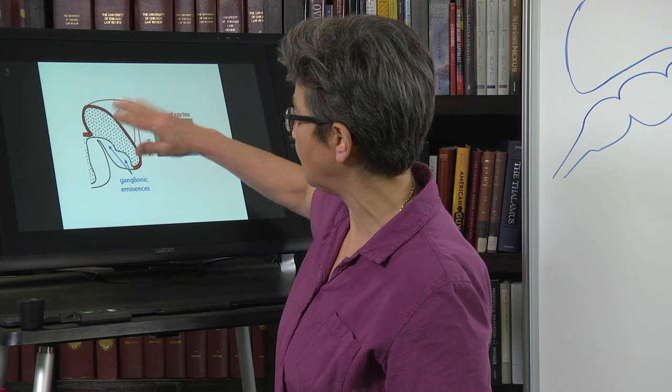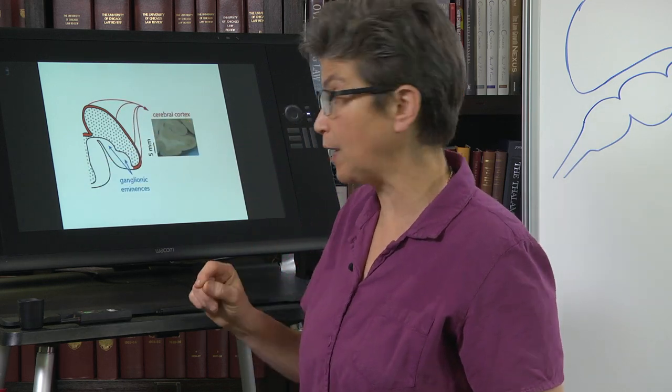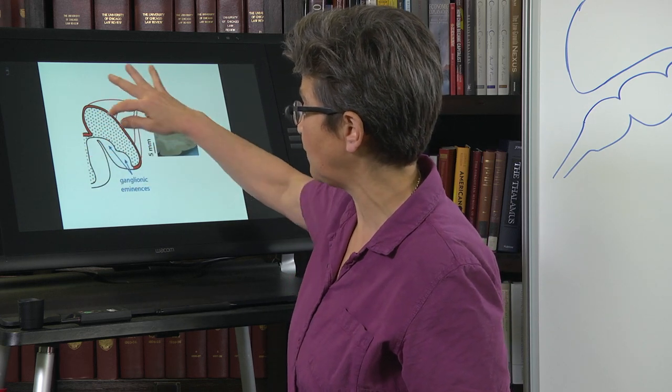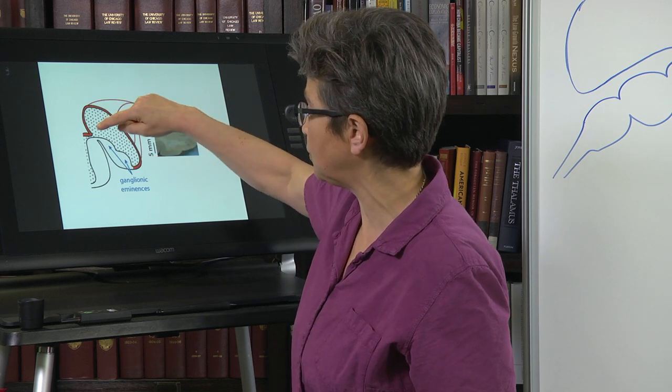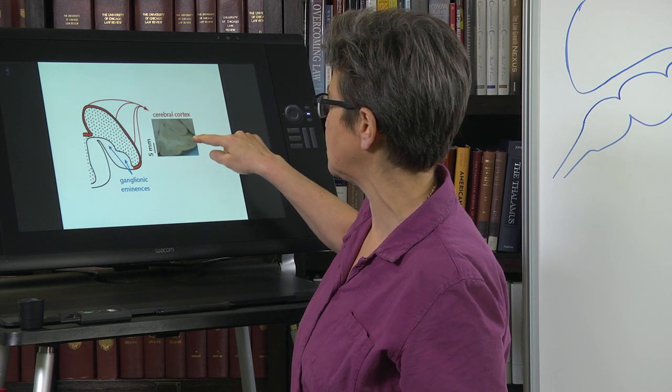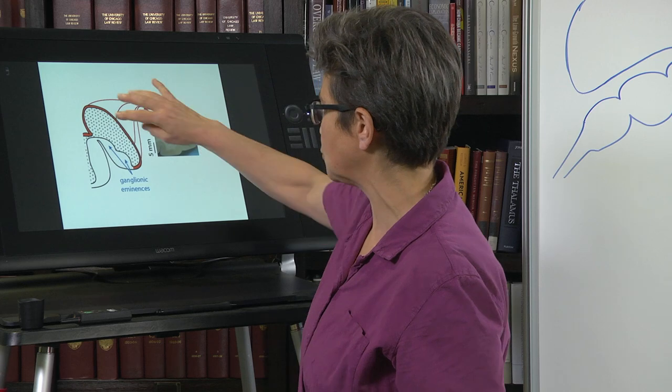And so here what we have is a cross-section through the embryonic brain. Here's the diencephalon, here's one telencephalic hemisphere. And you can see in red, I've put the dorsal part, which is going to become the cerebral cortex. And the cerebral cortex is just, as we said before, just this outer rind of the cerebrum.